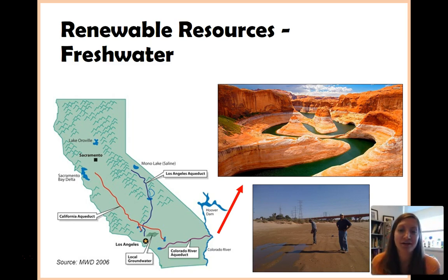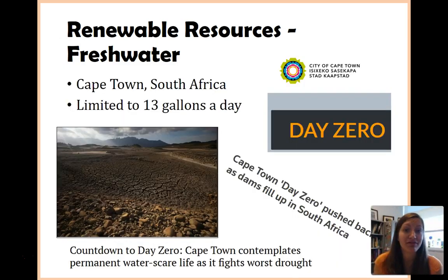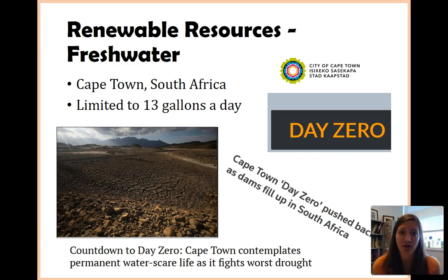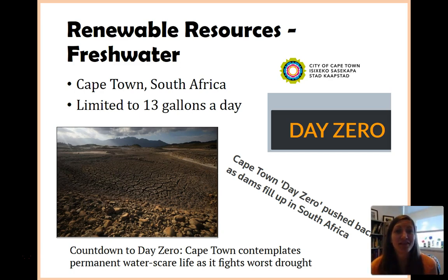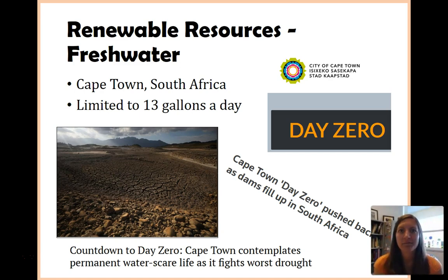Speaking of water crises, not only is California having some issues, but something pretty famous in the news recently is Cape Town — a pretty industrialized and large city in South Africa. What's happening there is they too have been having extreme droughts, limiting their citizens on their water use. California does this too — that's not that weird when you think about the United States.